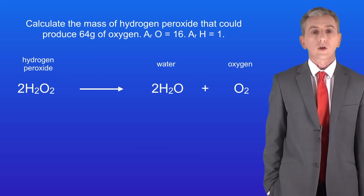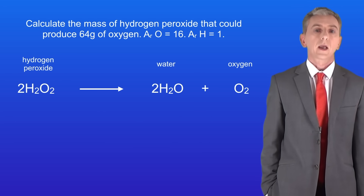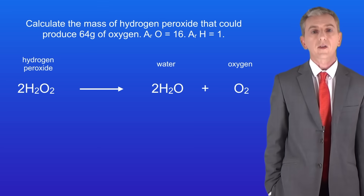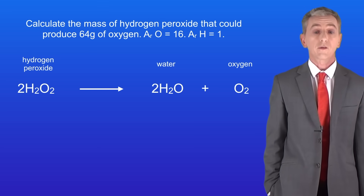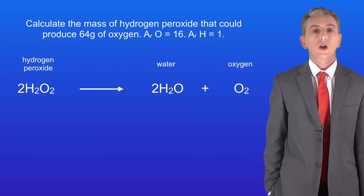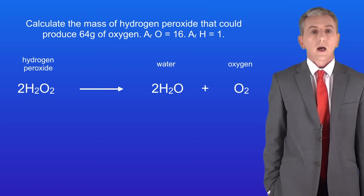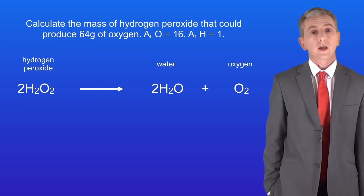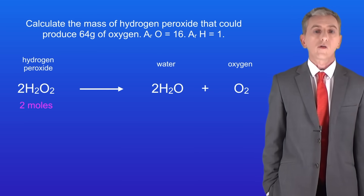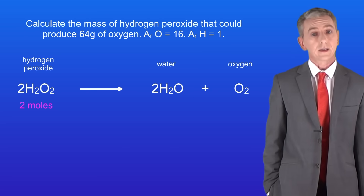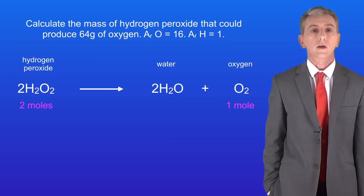Here's one more question for you to try. Calculate the mass of hydrogen peroxide that could produce 64 grams of oxygen. Pause the video and try this for yourself. Let's start by looking at the chemical equation. We can see that 2 moles of hydrogen peroxide are needed to make 1 mole of oxygen.